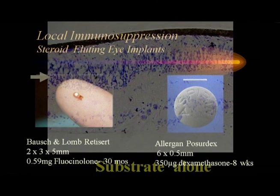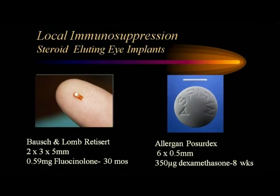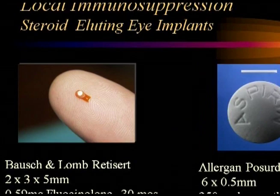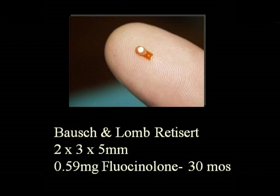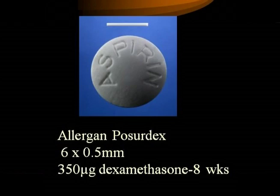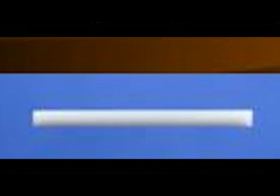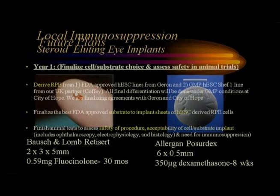What about local immunosuppression? What if we start doing this and there's a rejection — can we avoid giving the patient systemic steroids intravenously? The good news is that in the eye we have local immunosuppression options. We can place a tiny pellet in the eye — this is FDA approved — which can release steroids for greater than 30 months. There's also an Allergan product which is smaller and releases drugs for shorter periods — about eight weeks. So we can use these devices without having to subject our patients to systemic immunosuppression at the first step.